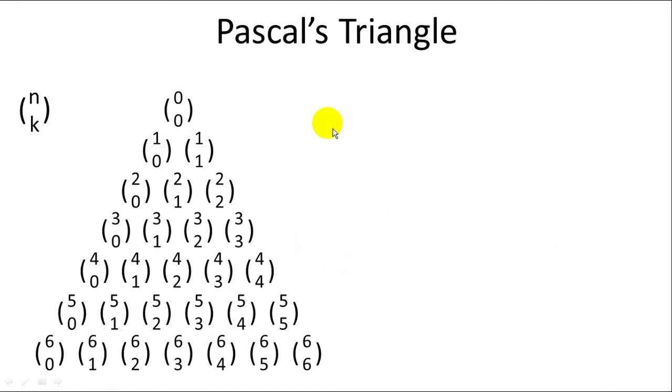Another way to look at n choose k problems is using Pascal's triangle. When we structure a triangle like this with n on top and k on the bottom, the top number is the row number so we can see row number zero, row number one, row number two, row number three. And k basically starts from zero at the left item and increases by one each item to the right.